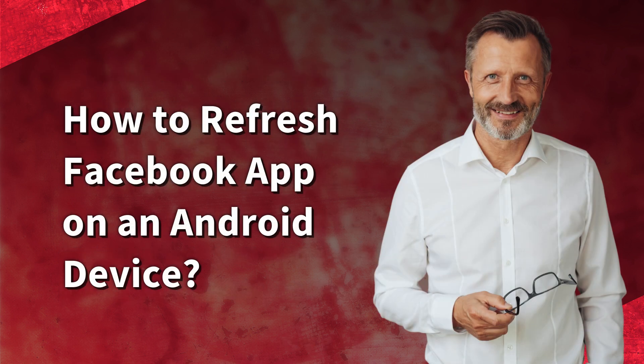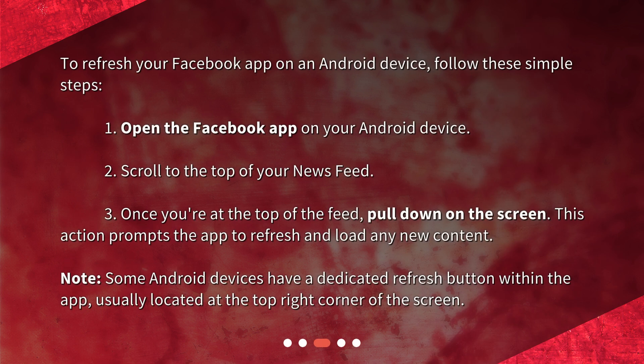How to refresh the Facebook app on an Android device. To refresh your Facebook app on an Android device, follow these simple steps. 1. Open the Facebook app on your Android device. 2. Scroll to the top of your news feed. 3. Once you're at the top of the feed, pull down on the screen. This action prompts the app to refresh and load any new content.